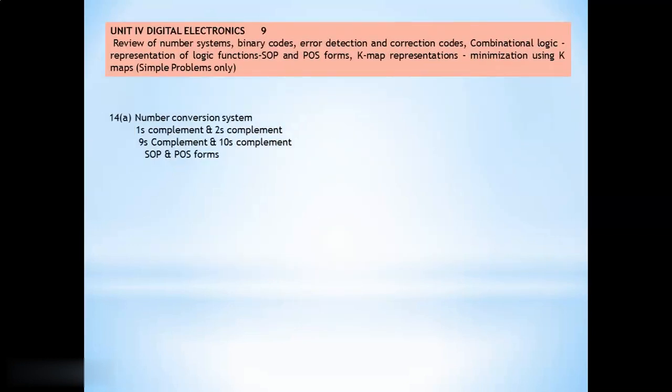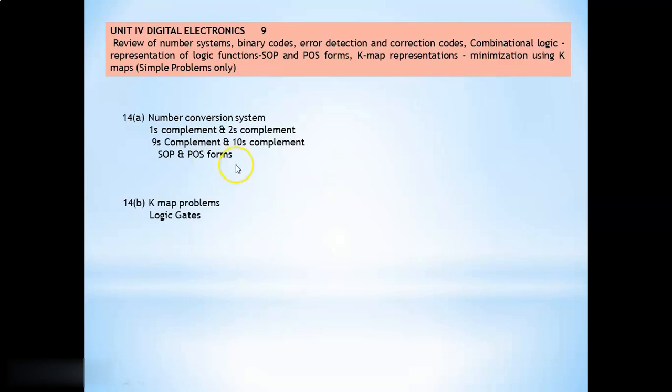Unit 4 is Digital Electronics. In this unit, in 14A, number conversion system, that means number conversion from binary to octal or hexadecimal to decimal, any conversion may be asked and problems from 1s complement, 2s complement, 9s complement, 10s complement are expected. Also expression or derivation for sum of product or product of sum. Again, in 14B, K-map problems are expected. K-map representation, minimization using K-maps. And the logic gates are also another expectation.